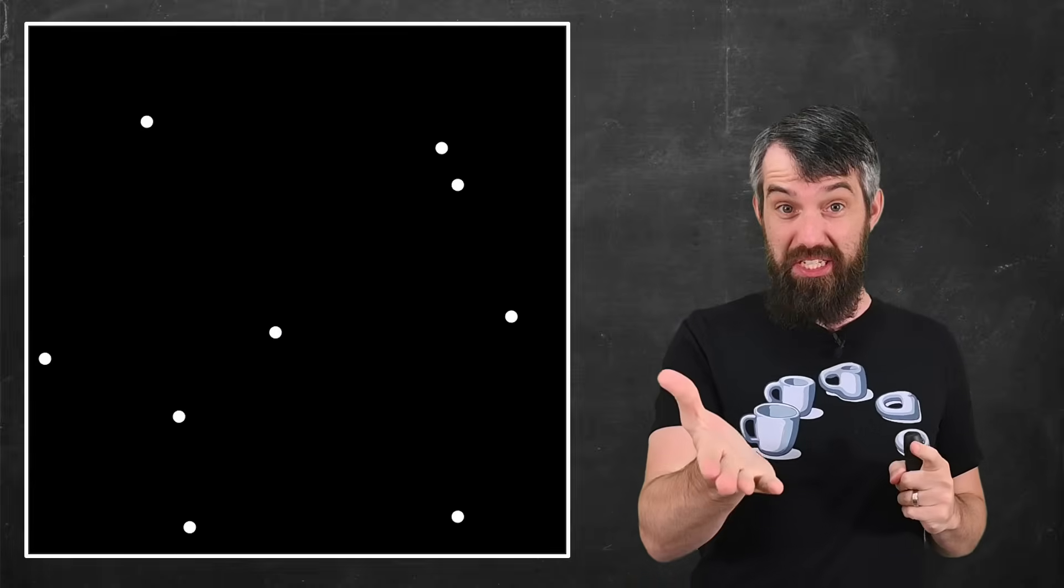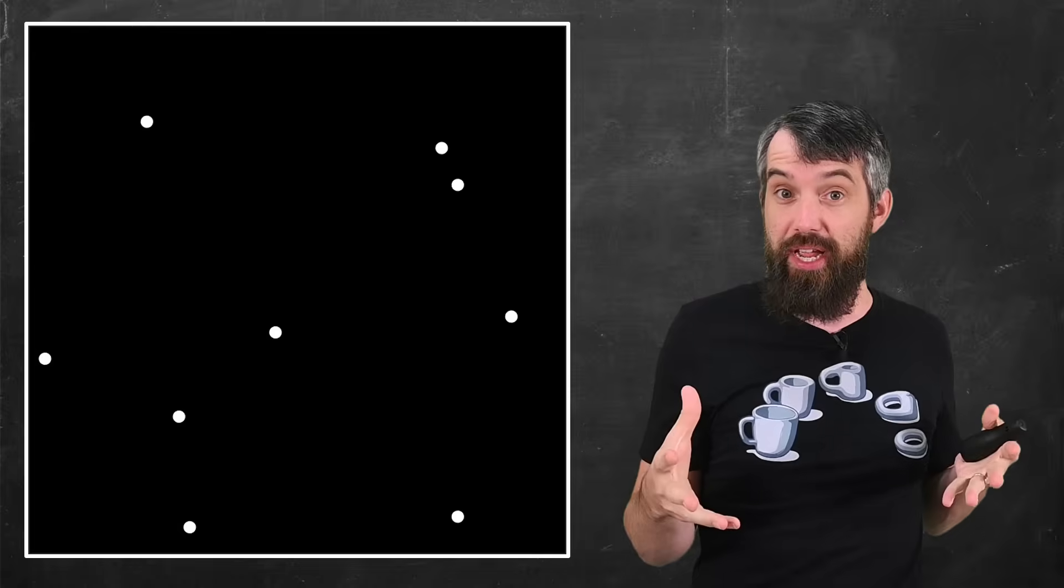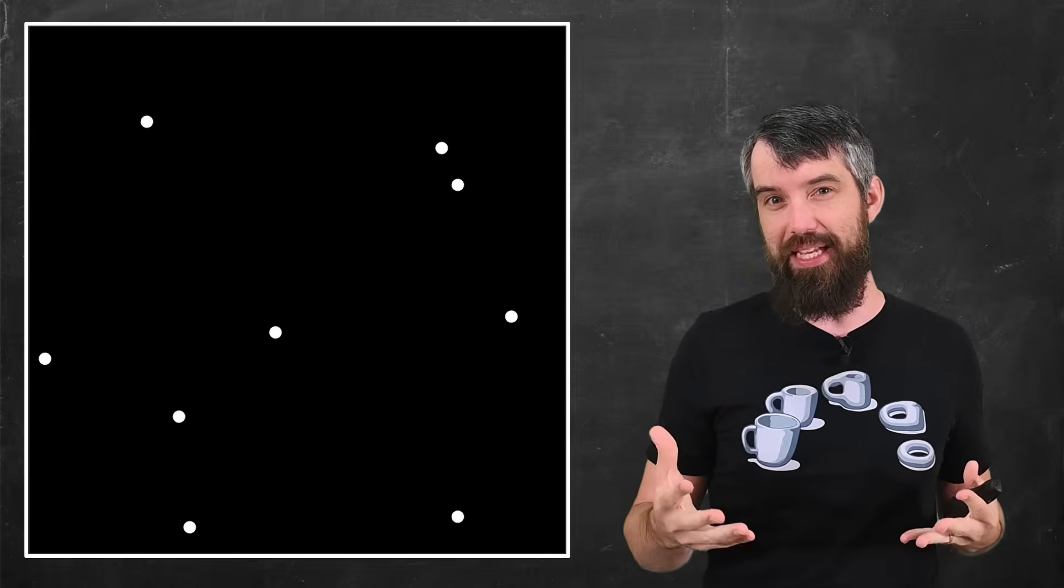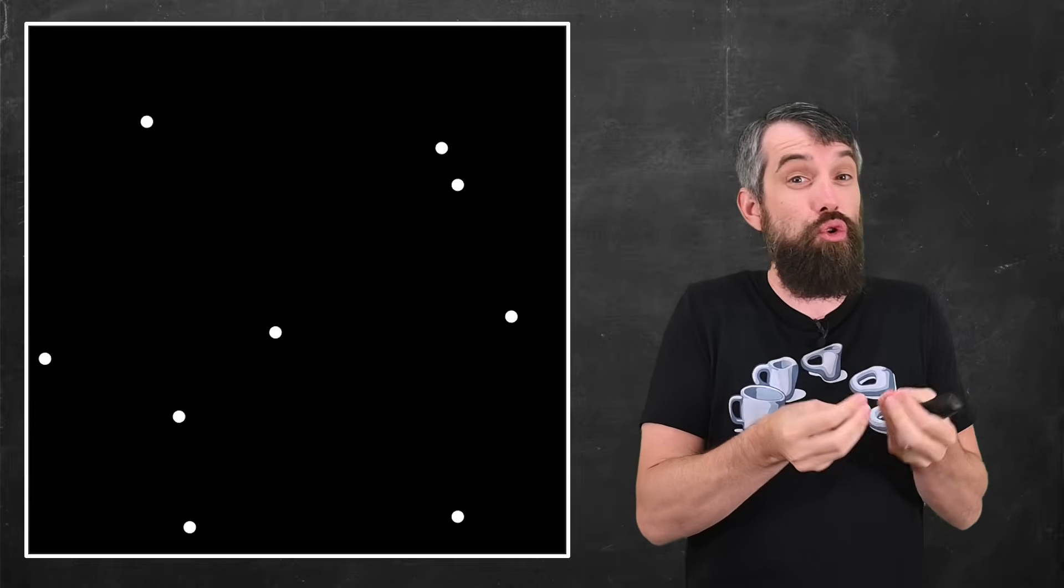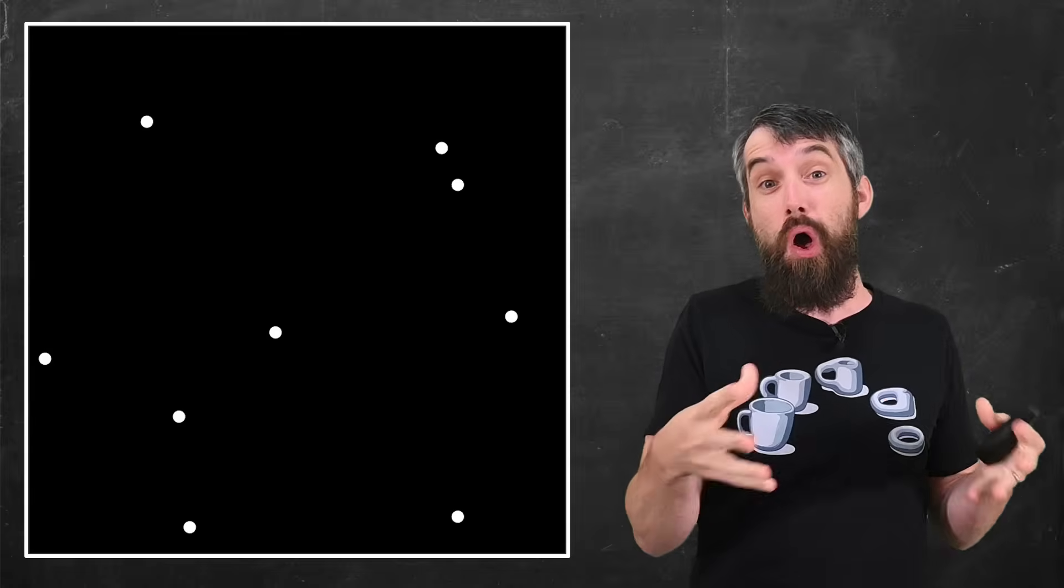My favorite example for illustrating why this pattern occurs is with crystallization of some medium. Imagine you've got some two-dimensional medium and it's going to crystallize. Crystals tend to grow from random seed points, little impurities that cause crystals to grow.